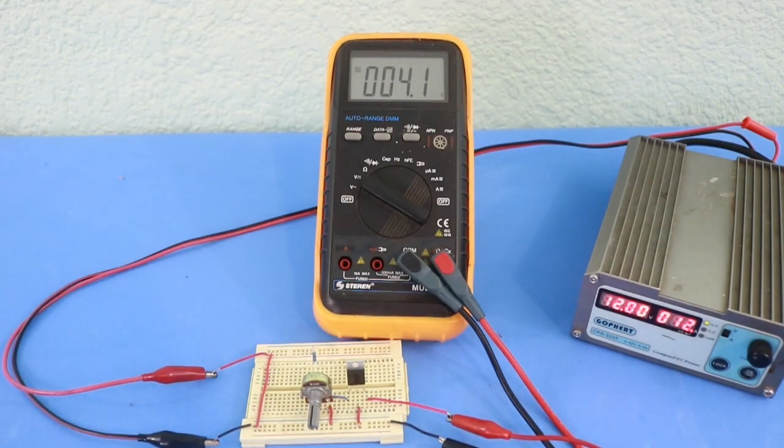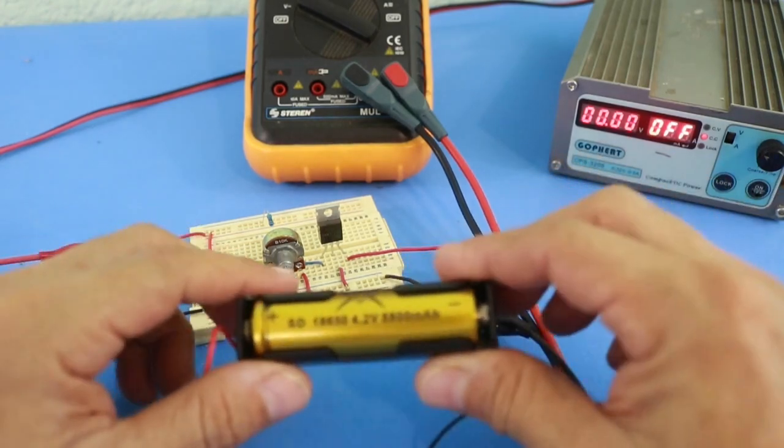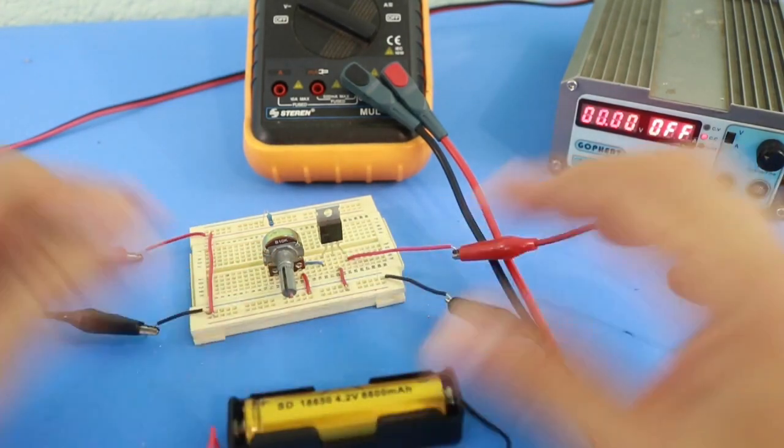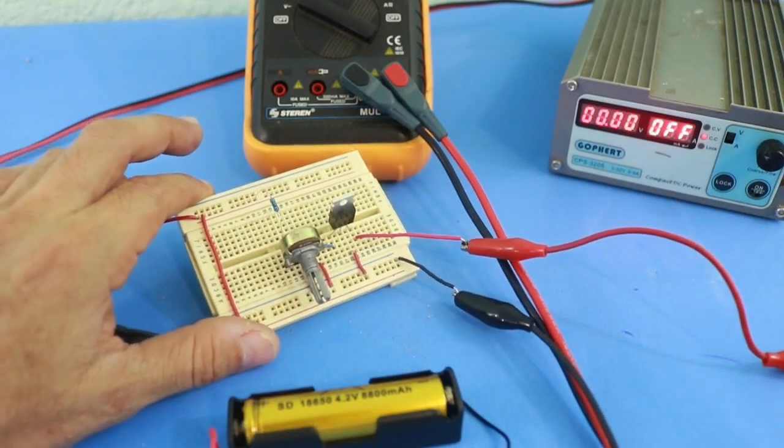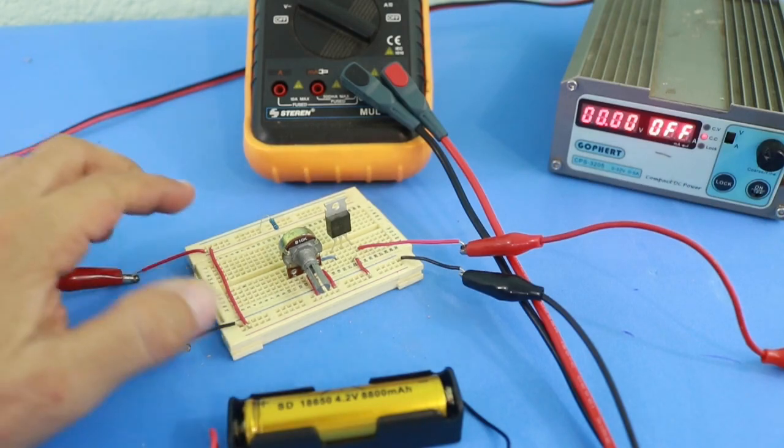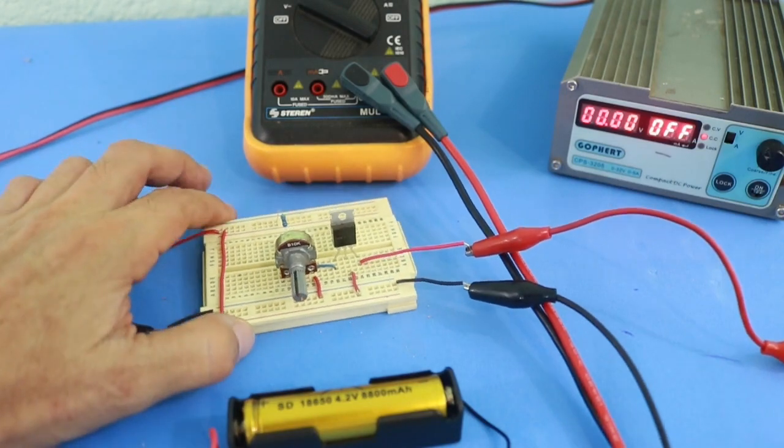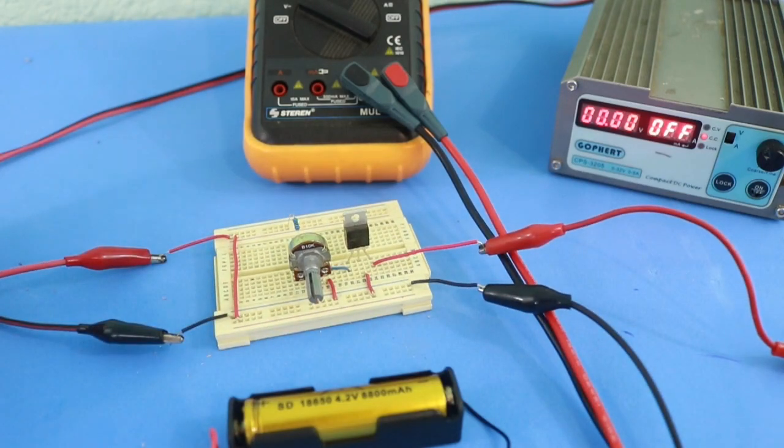4.1 volts. This is the battery that I want to charge, and our charger is the simplest charger in the world, but with simplicity we have disadvantages of course. One of the disadvantages of this charger is that it is not current limited.